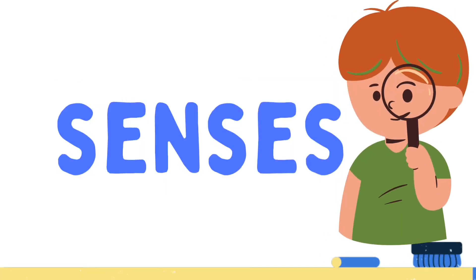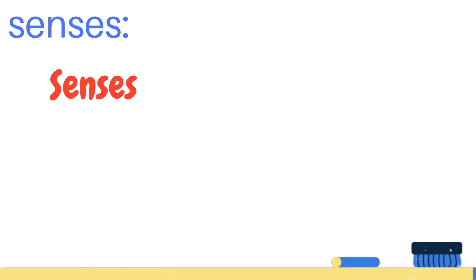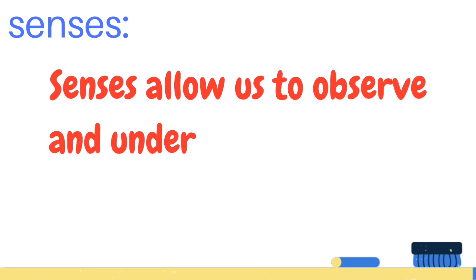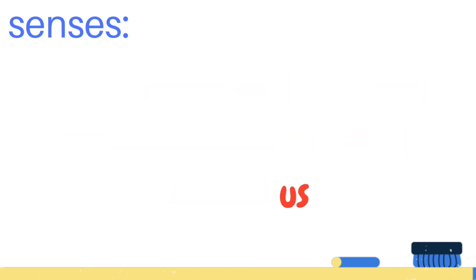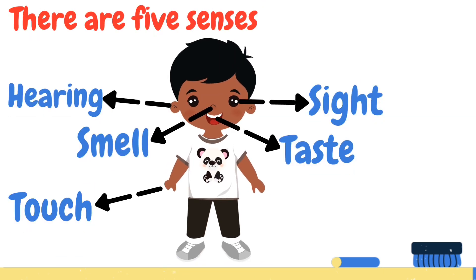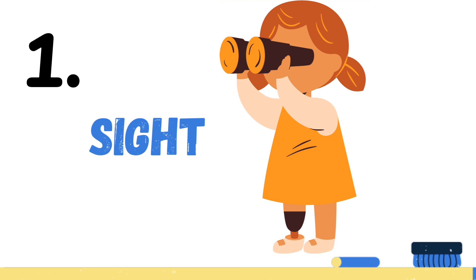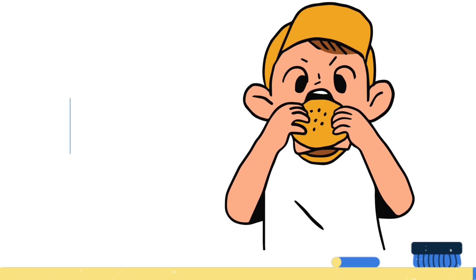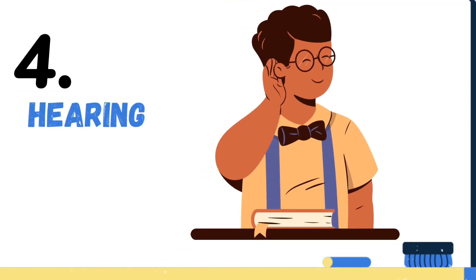Senses allow us to observe and understand the world around us. There are five senses: Sight, Taste, Smell, Hearing, and Touch.